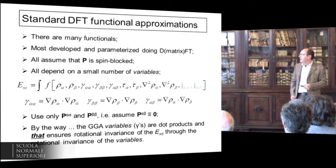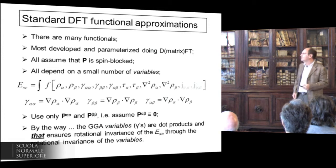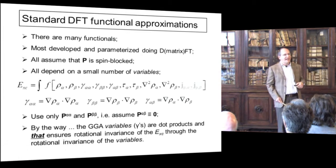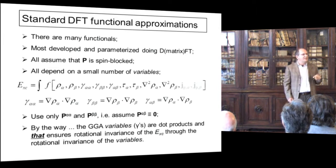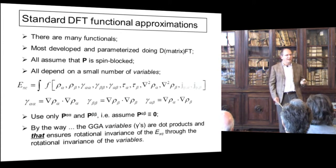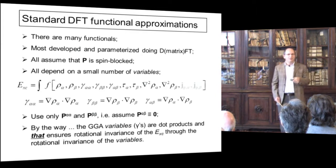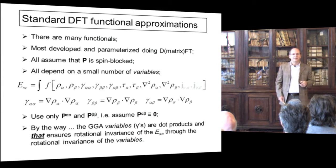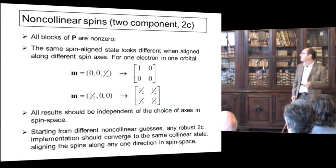The fact that we take the square of the magnitude of the magnetization density gradient also ensures that the energy is rotationally invariant with respect to rotation of the molecule. Taking the gradient by itself, you would have to solve a problem of rotational invariance; taking the square of the magnitude gets rid of it. Now if you want to do non-collinear spins — which is the same as saying you want to do a two-component calculation — all the blocks of the density matrix P are non-zero.